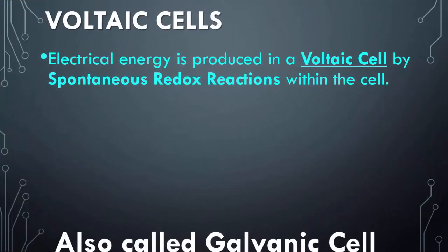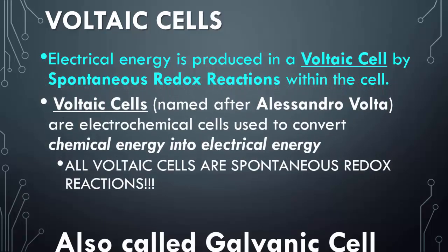Electrical energy is produced in a voltaic cell by a spontaneous redox reaction. Spontaneous means it happens on its own without any outside source. This can also be called a galvanic cell, but we name them after Alessandro Volta because he originally started the whole idea. The main thing is that chemical energy is being converted into electrical energy — the transferring of electrons is chemical energy, and the electrical energy is the ability to do work.